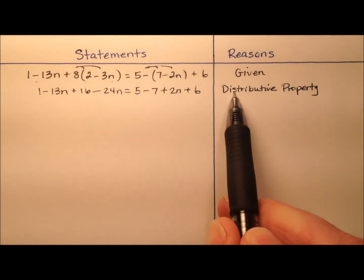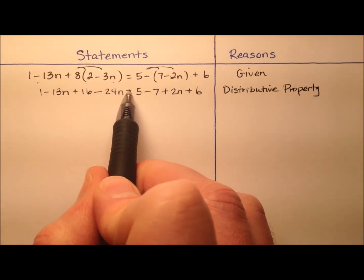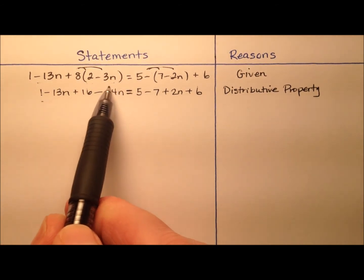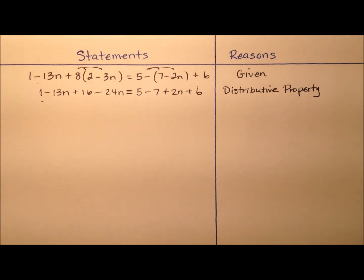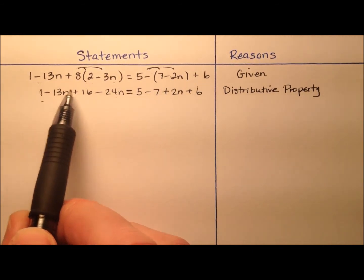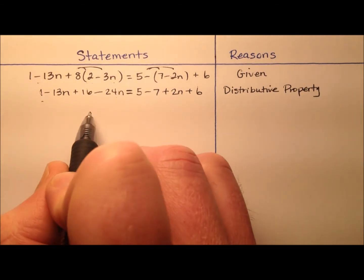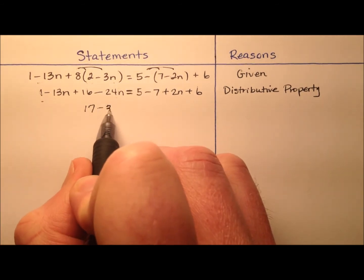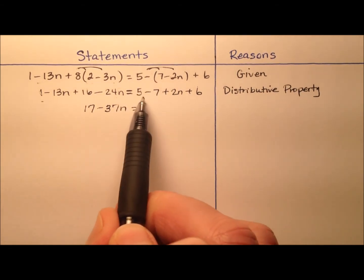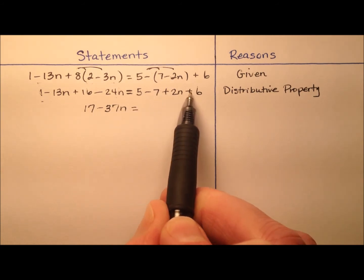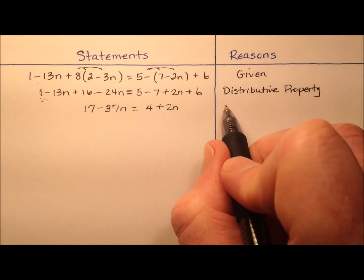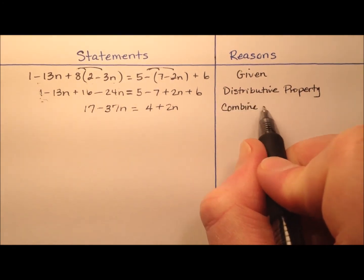An equation is just two expressions set equal to one another, and each expression can be simplified. We have like terms: 1 plus 16 makes 17, and negative 13n minus 24n is negative 37n. On the right side, 5 minus 7 is negative 2, negative 2 plus 6 is 4, plus 2n. So we have 17 minus 37n equals 4 plus 2n. We combined like terms to get here.